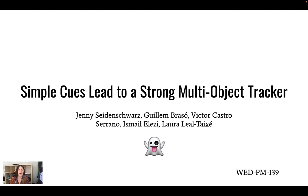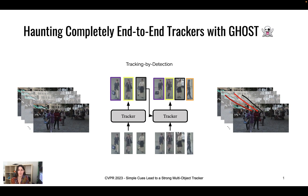Welcome to the video of our paper 'Simple Cues Lead to a Strong Multi-Object Tracker.' For a long time, tracking-by-detection was the default paradigm for online multi-object tracking, where detections were generated first using some off-the-shelf detector and then the detections were associated over the frames using the tracking algorithm.